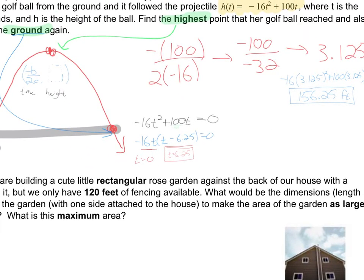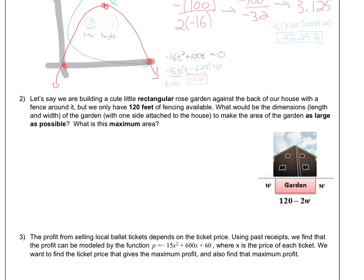So those are the two answers. We found the highest height, and then we found when it hits the ground again. Number two. Let's say we're building a cute little rectangular rose garden against the back of our house with a fence around it, but we only have 120 feet of fencing available. So 120 feet of fencing available. Well, that is going to lead me to think that we're dealing with perimeter here.